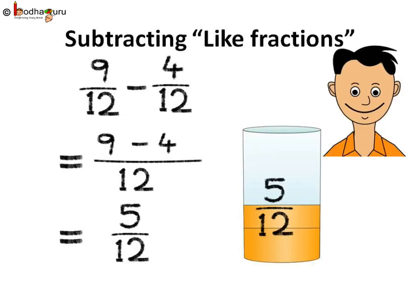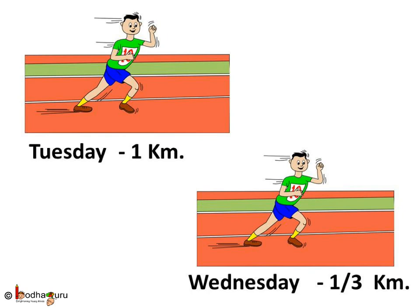So, let us subtract nine by twelve minus four by twelve. As they are like fractions and the denominators are the same, nine minus four is five. So, the answer is five by twelve. So, five by twelve glass of juice was left with Aman.